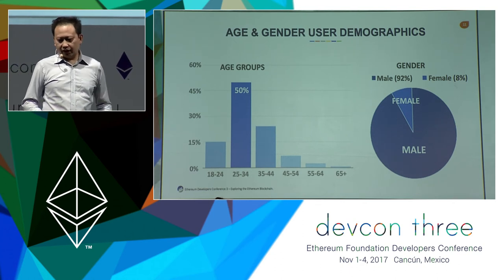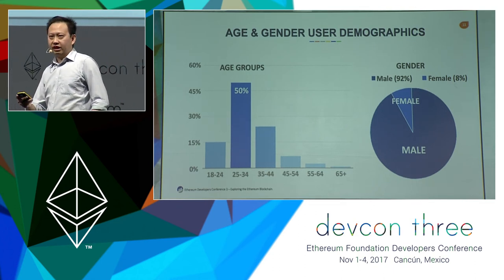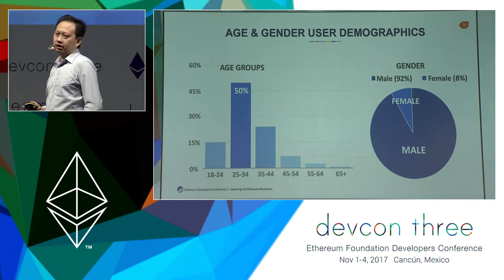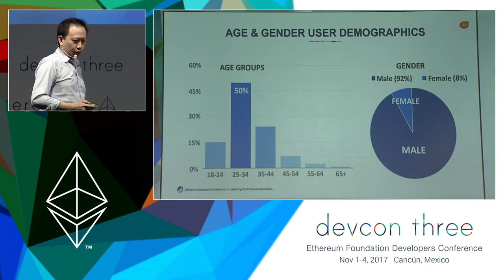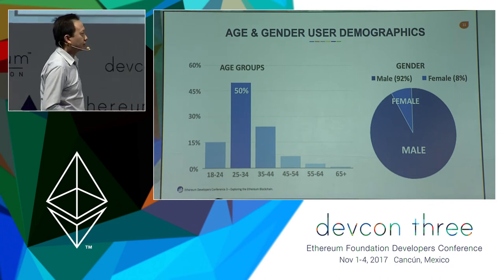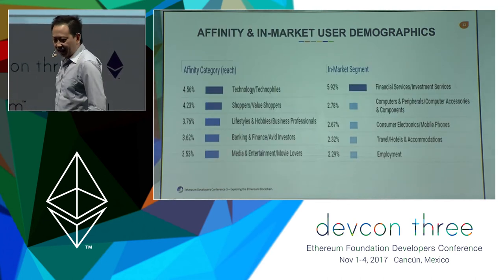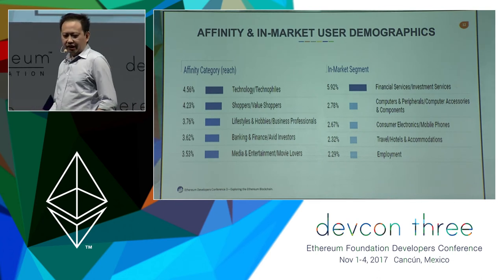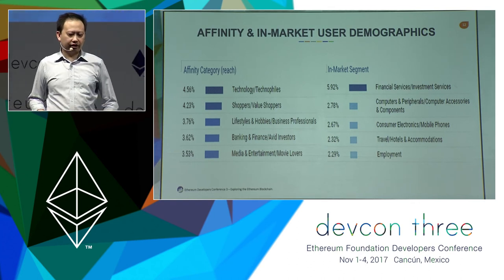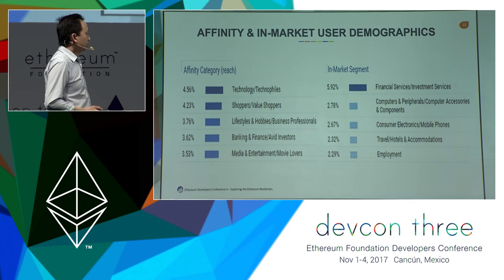As for the age and gender user demographics, our data was fairly consistent with what one might expect in the crypto scene. It's still largely dominated by males, who make up 92% of the user base, with 50% of users belonging to the age group of 25 to 34 years of age. Females only make up 8%. Looking at affinity and in-market user demographics, we generally see users with interest in areas of technology and also those interested in financial and investment services.